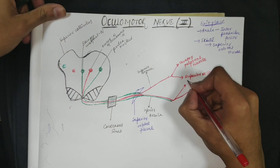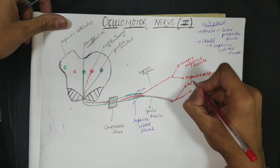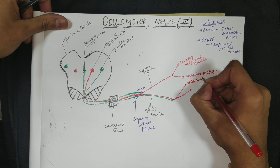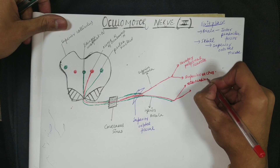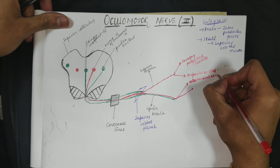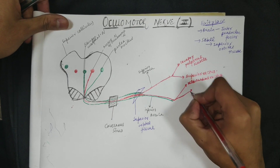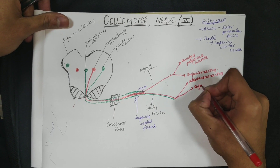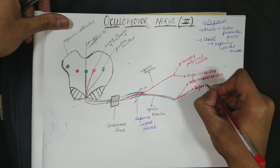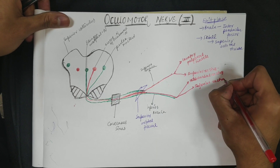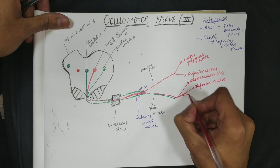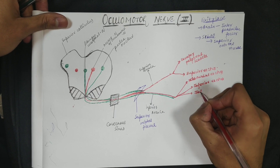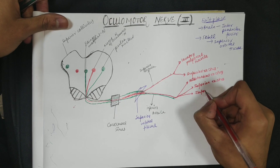The inferior branch supplies three muscles: the medial rectus, the inferior rectus, and the inferior oblique muscle.